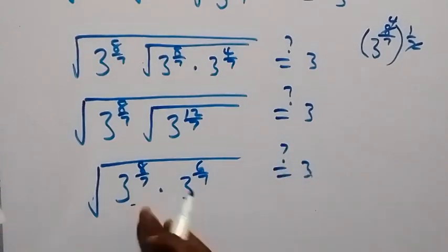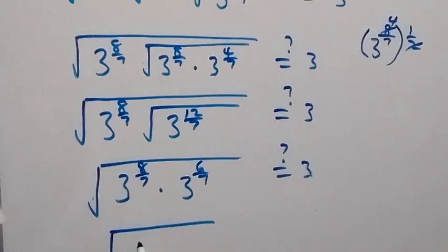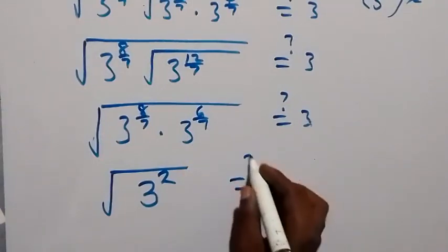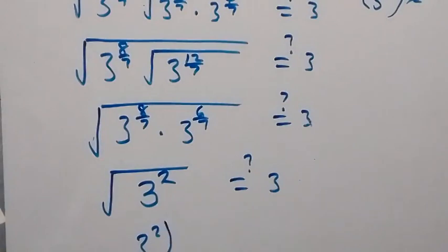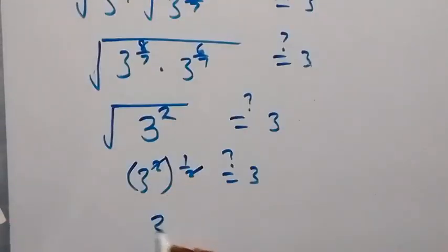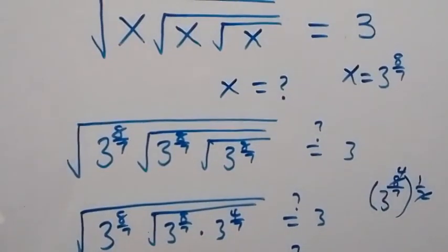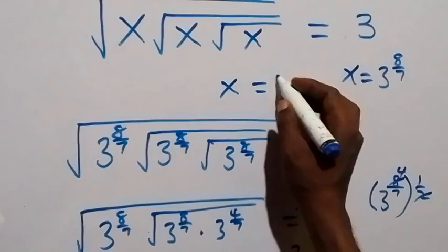Adding the powers gives 14 over 7, which equals 2, so we have the square root of 3 to the power 2. Taking the square root gives 3 to the power 1, which is 3. The left-hand side equals 3, confirming that x equals 3 to the power 8 over 7 satisfies the given problem.